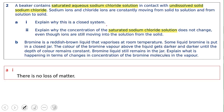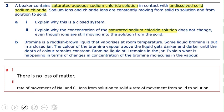Part (b) of Q2: Explain why the concentration of the saturated sodium chloride solution does not change even though ions are still moving between solution and solid. This is because at equilibrium, the rate of movement of Na⁺ and Cl⁻ ions from solution to solid equals the rate from solid back to solution, so the overall concentration is unaffected.